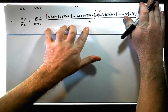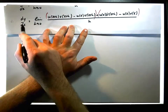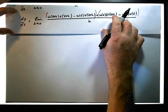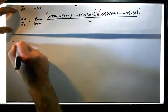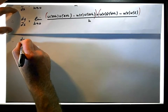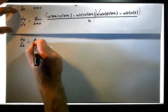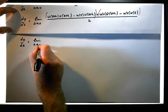So we're going to look at this particular term and evaluate it. Therefore, dy/dx is equal to the limit as h tends to zero...